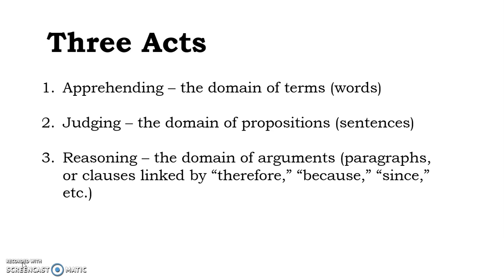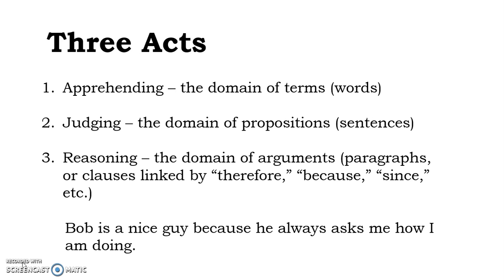Perhaps I can make this a little bit clearer. We have the word 'Bob.' Bob names a person. What if I say, 'Bob is a nice guy'? That marks a transition between apprehension — just apprehending Bob — and making a judgment about him. What if I say, 'Bob is a nice guy because he always asks me how I'm doing'? Now I'm no longer just making a judgment about his niceness; I'm explaining why he's nice.